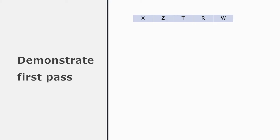Let's demonstrate it on the screen. Here's a list: X, Z, T, R, W — clearly not in sorted order. Let's see how the bubble sort would sort this list. The first traversal, the first pass down the list: the marker starts at the first position, element 0, and is compared to the element that follows it, Z. Those elements are the right way round — X comes before Z in the alphabet — so the marker moves on to the next item and nothing happens.